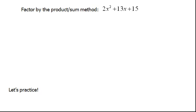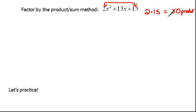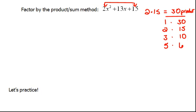Here's what the product sum is. We're going to take the first and the last numbers and multiply them together. So 2 times 15 would give us 30. That's the product part of the product sum method. Then we're going to factor that. Now, 30 could be 1 times 30, or 2 times 15, or 3 times 10, or 5 times 6. And I think that's all of those.